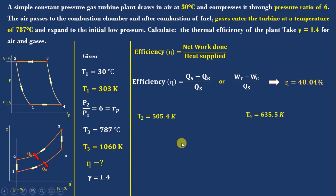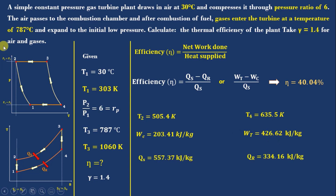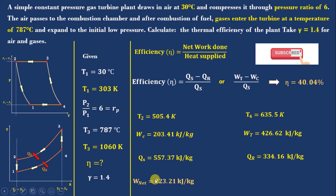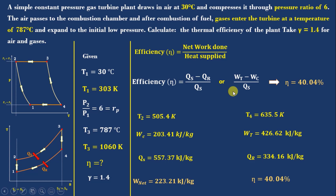To summarize: T1 is given, T2 was calculated, T3 is given, and T4 was calculated — so all 4 state point temperatures are known. Compressor work input, turbine work output, heat supplied, and heat rejected were all found. Wnet = 223.21 kJ/kg of air and efficiency = 40.04%. We'll use this as a base problem and continue with intercooler, regenerator, and reheater in future classes. Next class will cover the effect of compressor and turbine efficiency on the gas turbine engine. If you like this video, please share, subscribe, and like. Thank you.